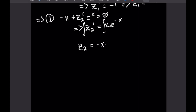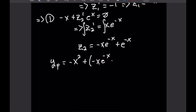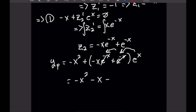Taking the antiderivative of z2' = x·e^(-x) gives z2 = -x·e^(-x) + e^(-x). Substituting into the particular solution: yp = (-x)·x + (-x·e^(-x) + e^(-x))·e^x. The e^(-x) and e^x terms cancel, leaving yp = -x² - x + 1. This problem only asks for the particular solution, so we move on.